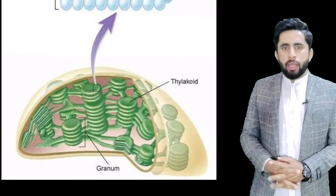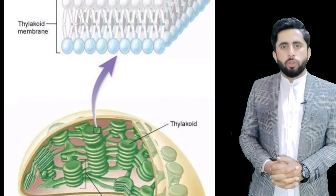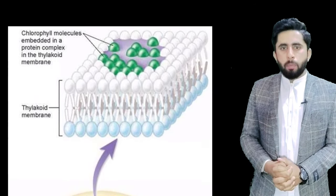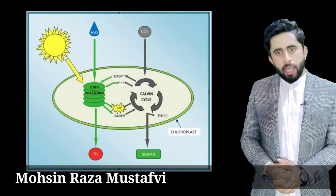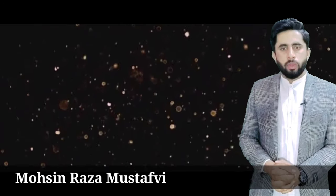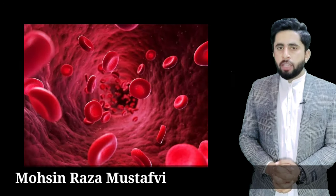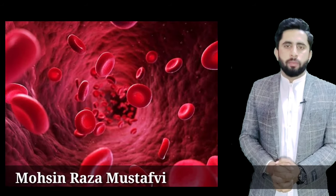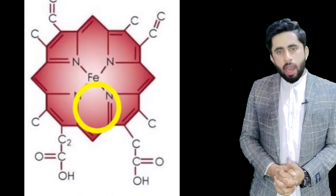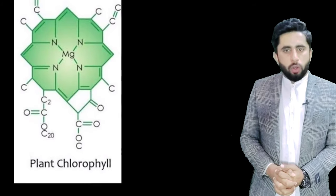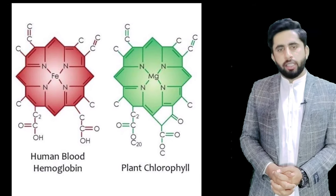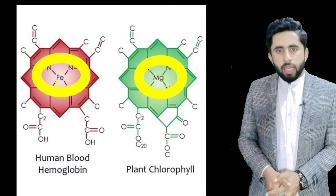Thylakoid کی membrane کے اندر ایک important pigment موجود ہوتا ہے جسے chlorophyll کہتے ہیں۔ یہ chloroplast کا membrane pigment ہے جو light energy کو trap کرتا ہے اور اس کی appearance green ہوتی ہے۔ Chlorophyll کی resemblance ہمارے blood میں موجود hemoglobin سے ملتی ہے، فرق یہ ہے کہ hemoglobin کے center میں iron اور chlorophyll کا central atom magnesium ہوتا ہے۔